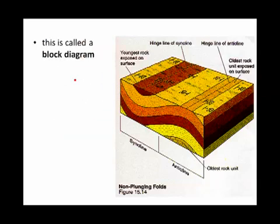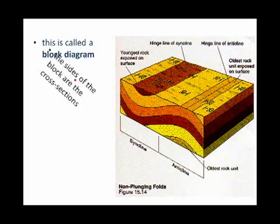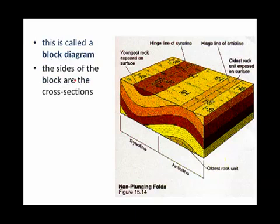Here we have what's known as a block diagram because it looks like a block. The sides of the block diagrams are cross-sections. So this cross-section here shows us that we have a clear syncline and an anticline. The other side here doesn't show that it's a syncline and an anticline. So not all cross-sections will give you the exact same information.